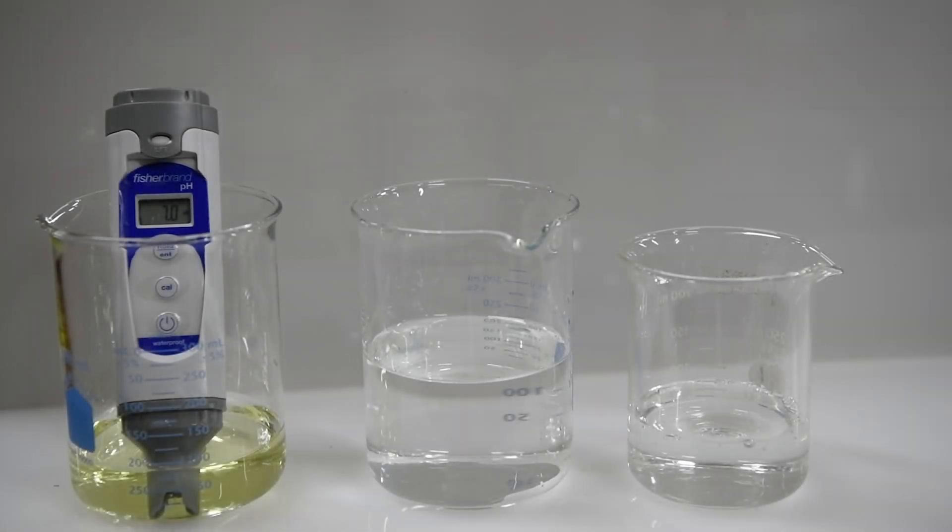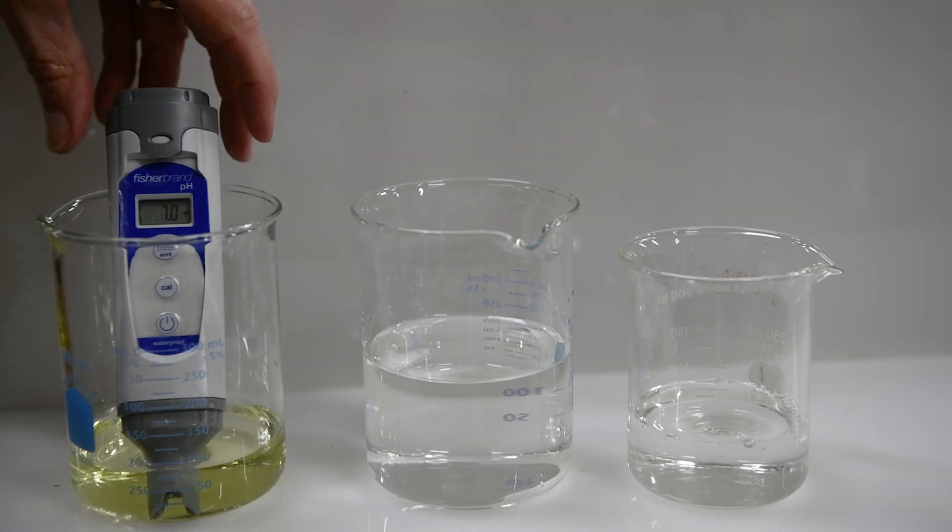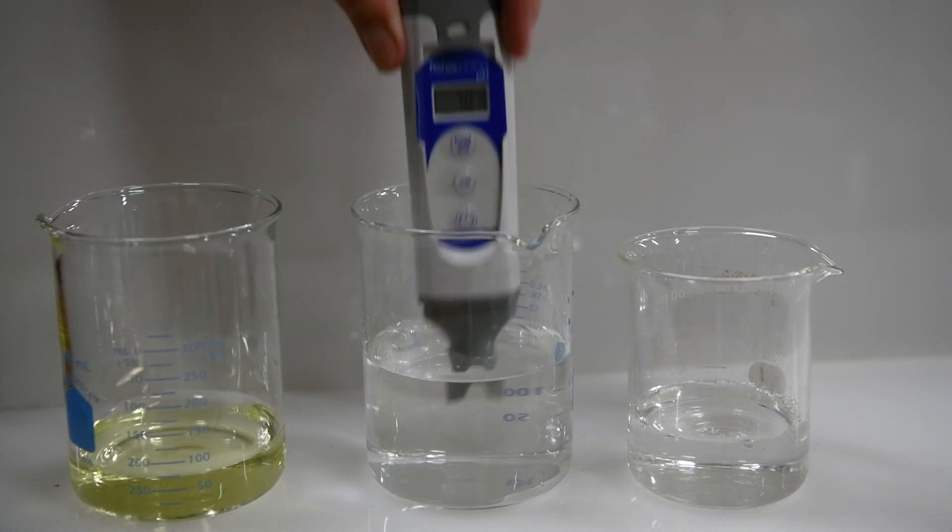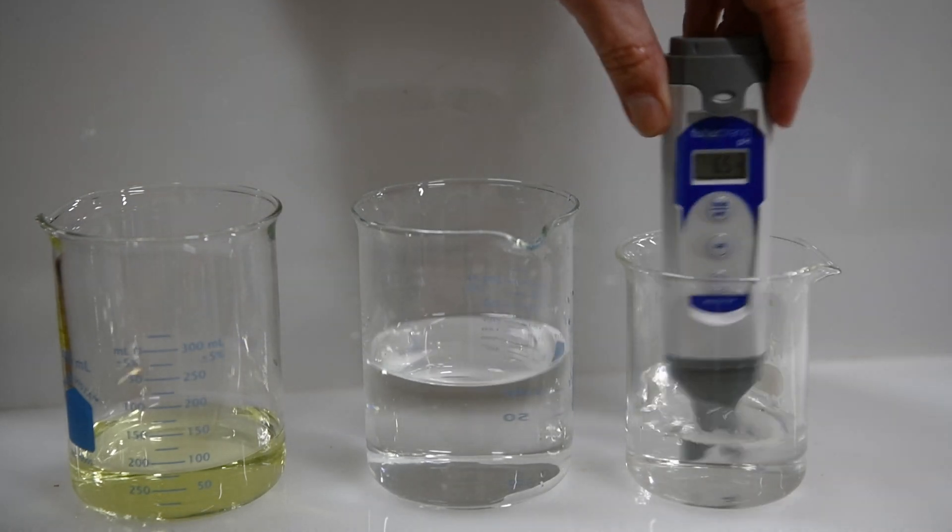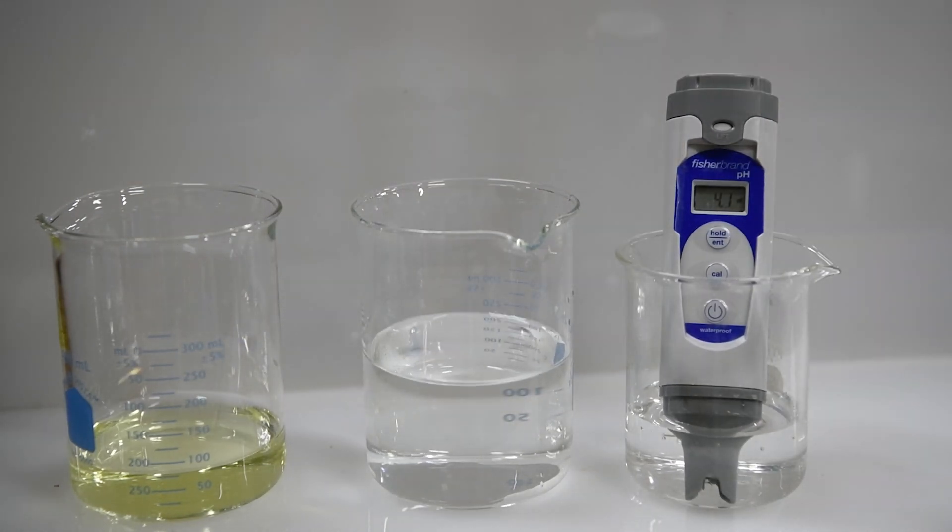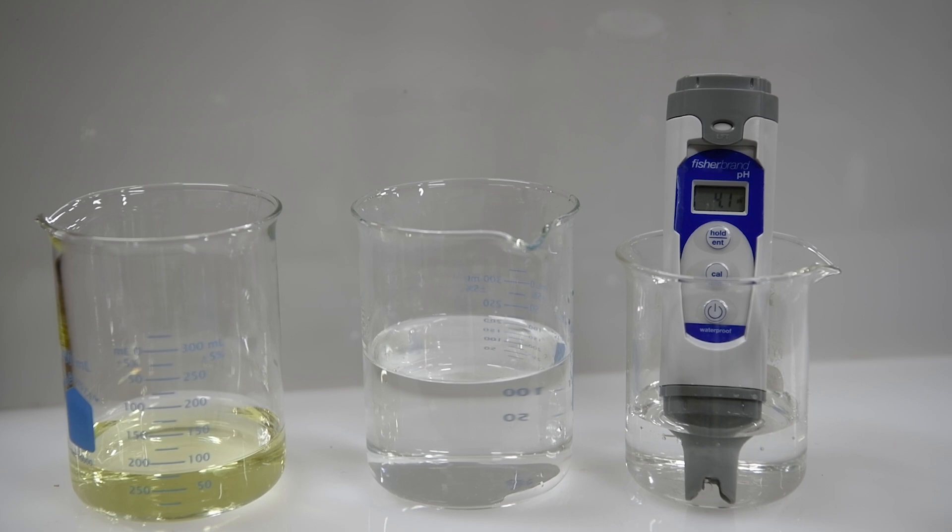Next, we'll test a sample of 7up for comparison. So once again, we'll rinse off our pH meter, place it in the 7up, give it a moment to balance out. And it looks like it's pH of 4.1.